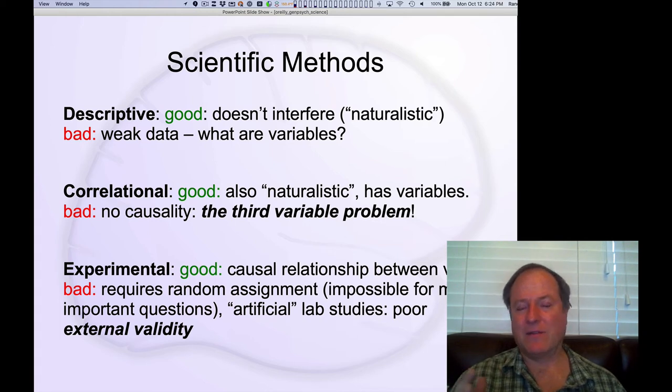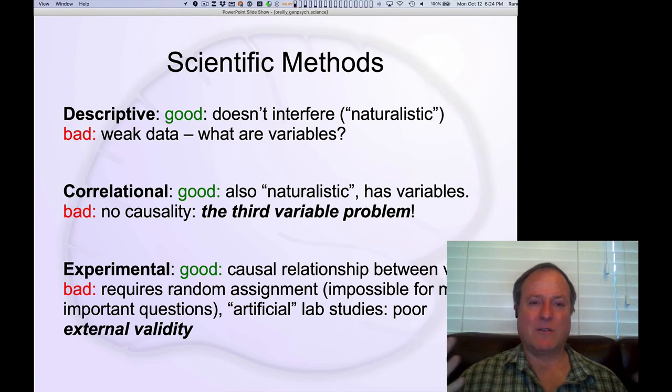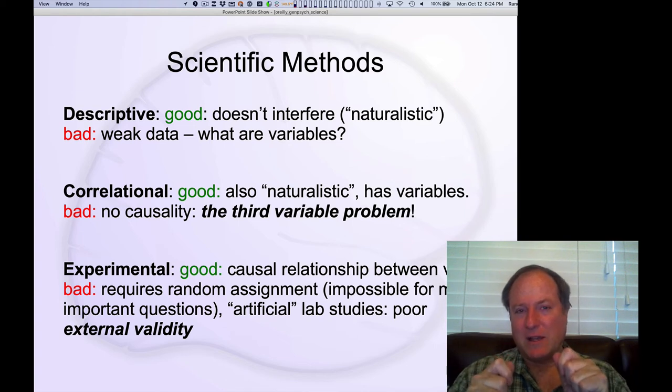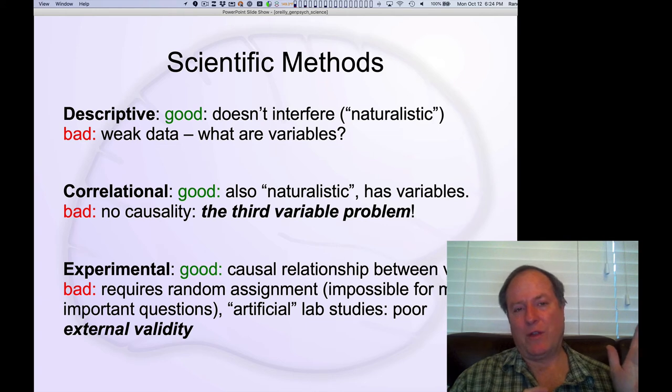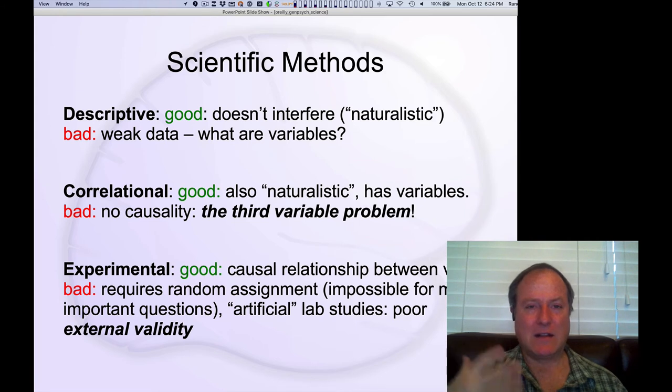And almost everything having to do with families and development, you're born into whatever family you live in and you can't randomly assign kids to different families, except in a few very weird exceptional cases. So we call this external validity. These studies that we can do experimentally that give us great understanding about the causal mechanisms, they may not help us understand what's actually happening in the real world that much. And this is actually a really important problem that plagues science and a lot of people are trying to figure out ways around these approaches. But there are kind of trade-offs, pros and cons for each of these different methods.